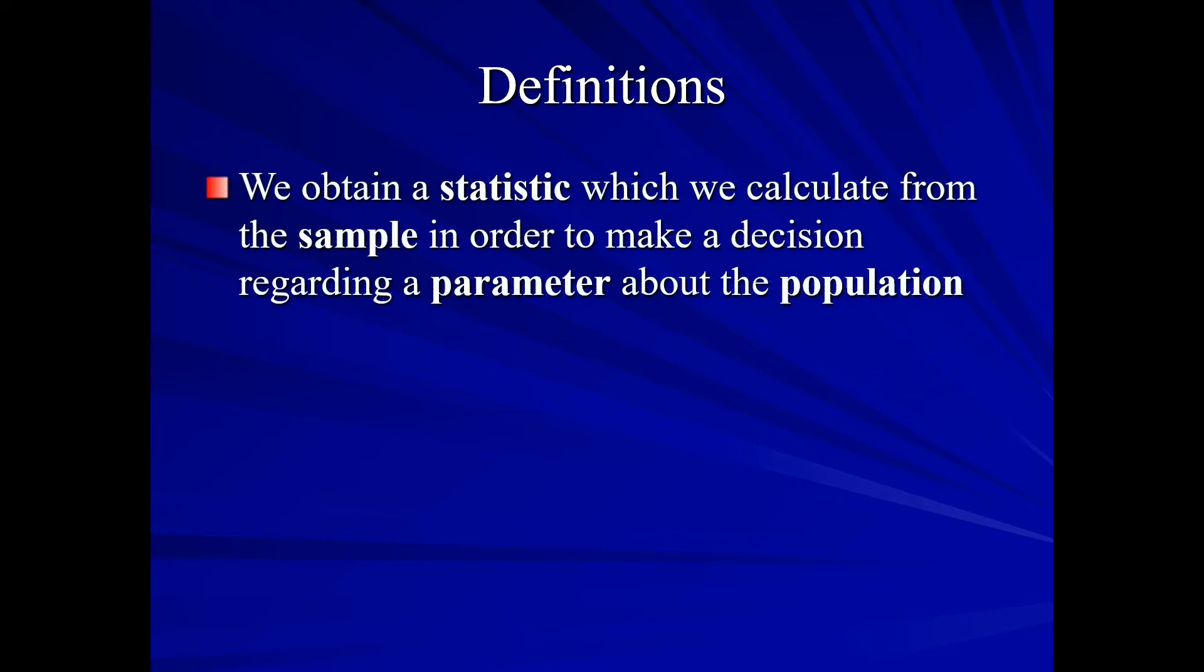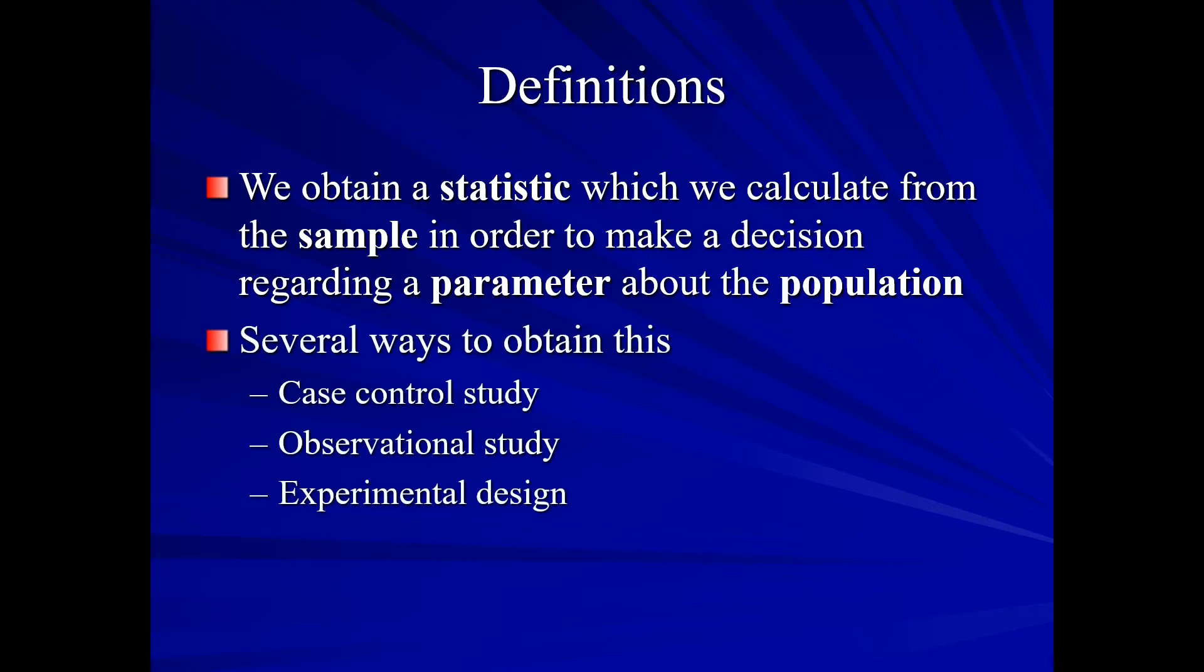So, why do we obtain a statistic? Well, we obtain a statistic that we calculate from the sample in order to make a decision regarding a parameter about the population. In other words, we collect the statistic so that we can then make some type of a decision regarding our unknown parameter. Now, there are several ways that we can actually obtain this statistic.